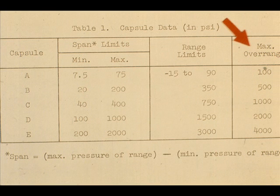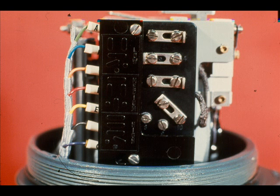Unlike the differential pressure transmitter, the pressure transmitter definitely can be damaged by overrange. Like the differential pressure transmitter, the links have to be set for the low, medium, or high span of a given capsule.